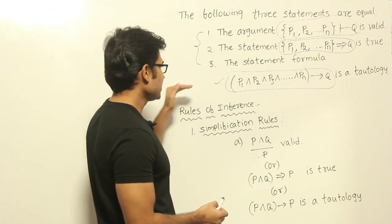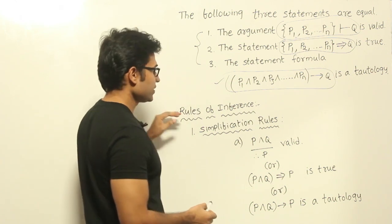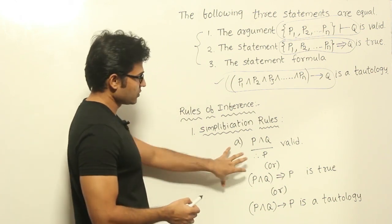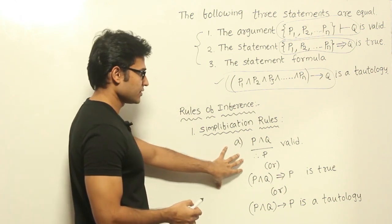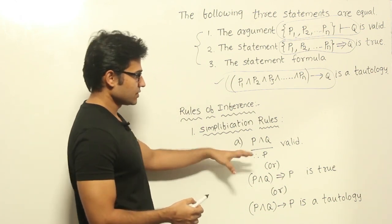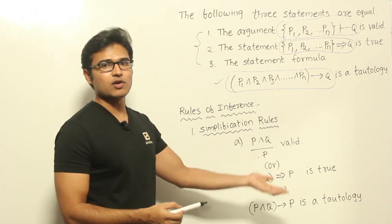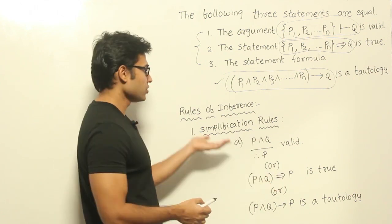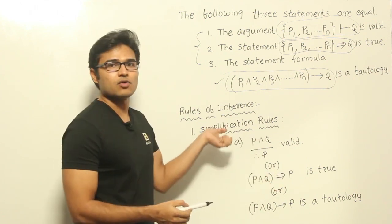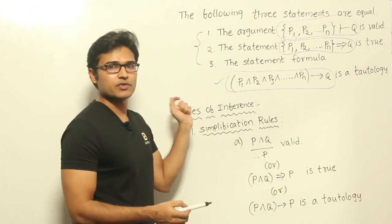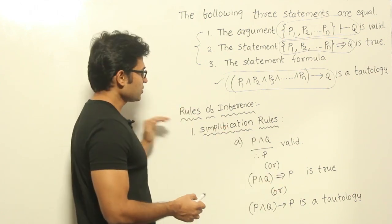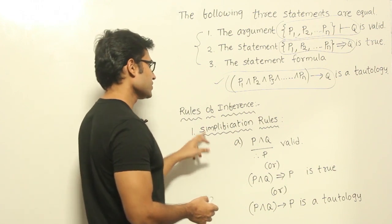Now let's see some rules of inference. Why are we using these rules of inference? Given some premises, if we have to derive a conclusion, we are going to use certain rules. They are called rules of inference. We shall start with the basic ones.